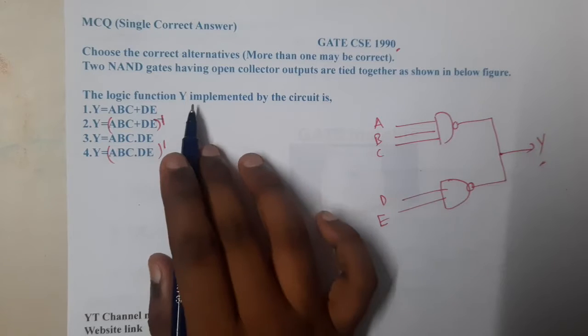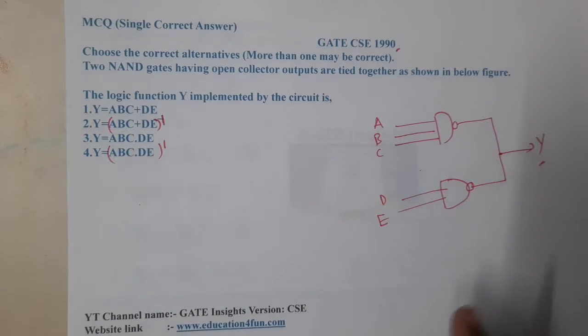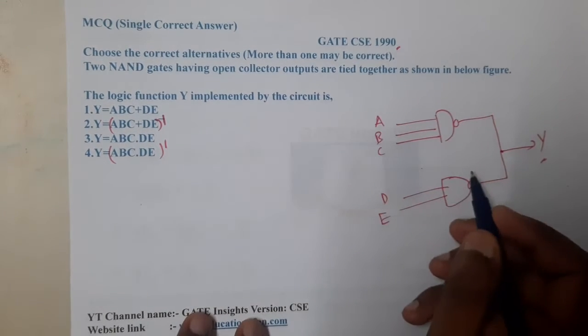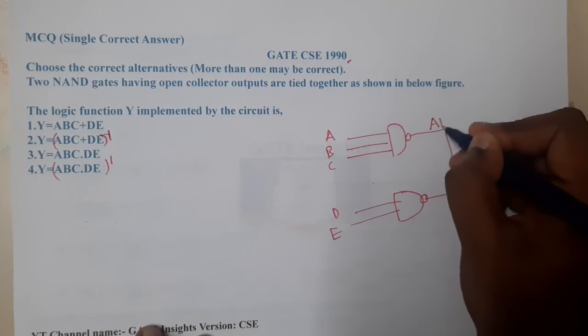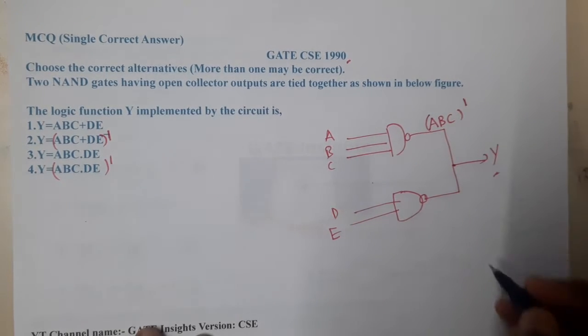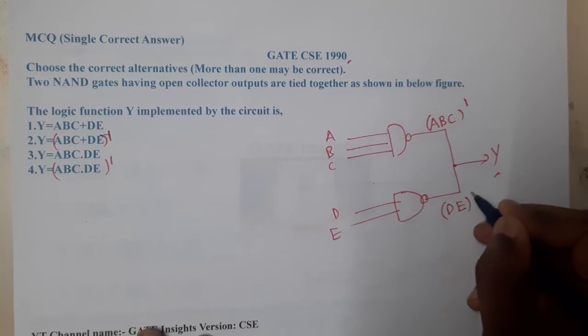The logical function Y implemented by the circuit is - so basically here they gave a circuit and they are asking what is Y here. By just observing, what is the result here guys? It is nothing but A into B into C whole complement. Similarly, this one here is D into E whole complement.